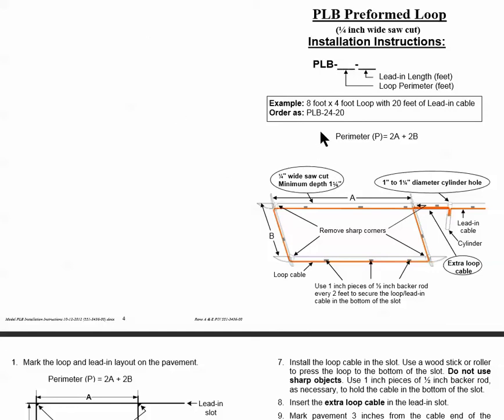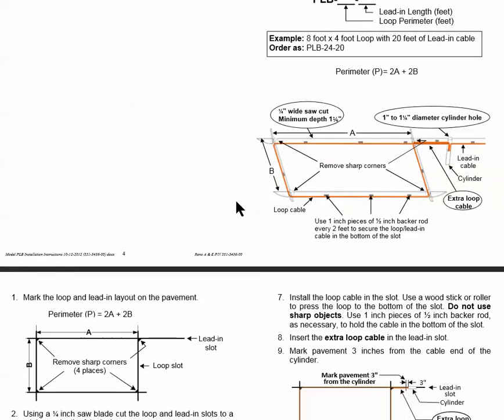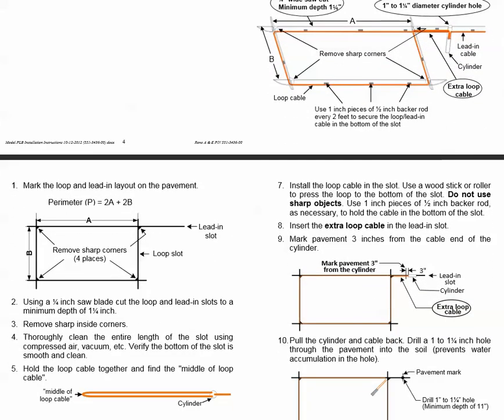The loop that you see pictured here is a Reno PLB preformed loop, which is a common representative example. So as you're going through the instructions, most manufacturers will have similar instructions and you can pretty much follow those.